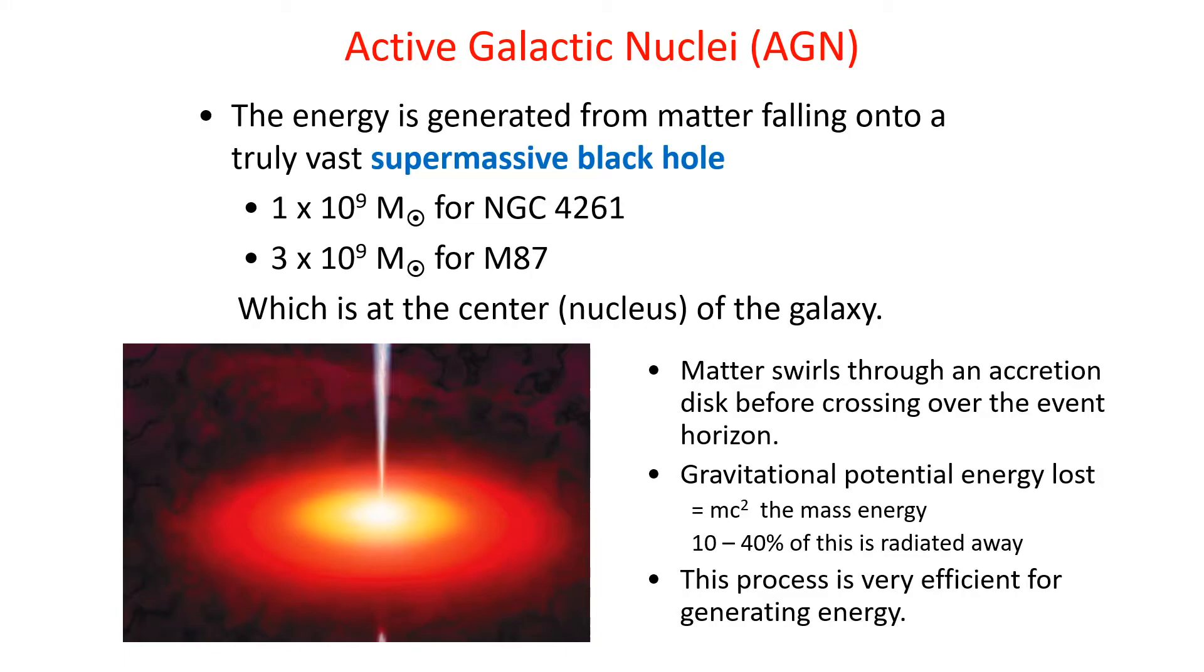The black hole is at the center of a galaxy, and matter is swirling through an accretion disk, as seen in the lower image, before crossing the event horizon. Gravitational potential energy is lost, and the available possible energy is the mass energy. Black holes are such good engines that they can convert 10 up to 40% of MC squared into pure radiant energy. So it's an incredibly efficient source of high energy radiation.